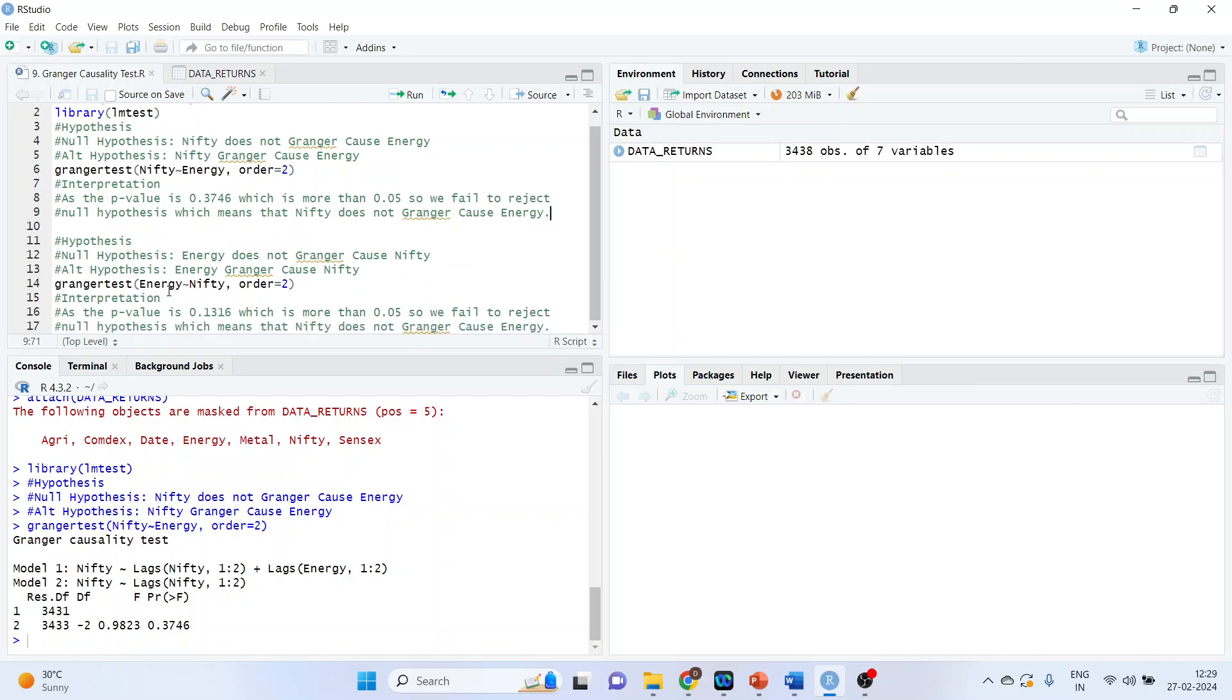Now let's check, does energy cause Nifty or not? So the null hypothesis is, energy does not Granger cause Nifty. Alternative hypothesis, energy Granger cause Nifty.